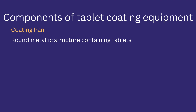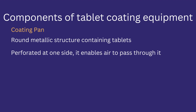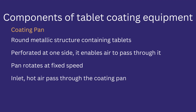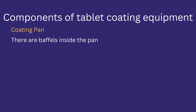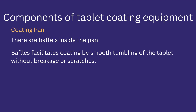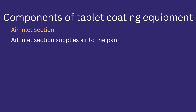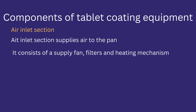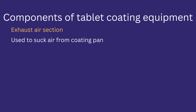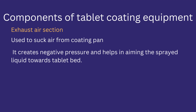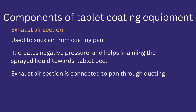The coating pan is a round metallic structure in which tablets to be coated are placed during the coating process. It is perforated on one side to allow air to pass through it. The coating pan rotates at a fixed speed during the process, and hot air passes through it. The pan is also fitted with baffles — small mechanical structures fitted at one end of the pan — which facilitate coating by ensuring smooth tumbling of tablets and preventing them from breaking or scratching. The air inlet section supplies air to the pan and consists of a supply fan, filter, and heating mechanism. The exhaust air section exhausts air from the coating pan, creates negative pressure, and helps direct the spray toward the tablet bed; ducting is used to connect the pan with the exhaust air section.